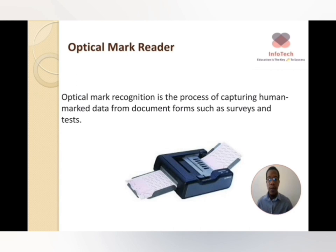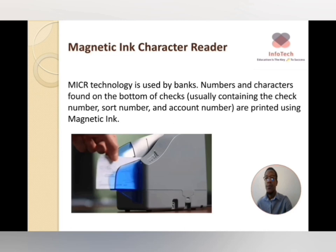To determine how many answers are correct, the OMR scans the information shaded on the paper. A computer system with software stores the answers to the questions, and after scanning it determines how many the student got right and how many were wrong.